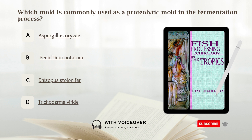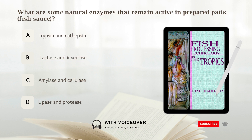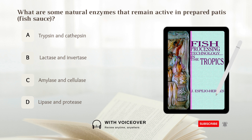What are some natural enzymes that remain active in prepared fish? A. Trypsin and cathepsin. B. Lactase and invertase. C. Amylase and cellulase. D. Lipase and protease. Answer: A. Trypsin and cathepsin.